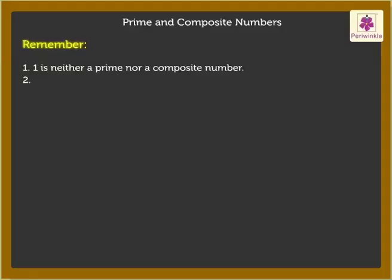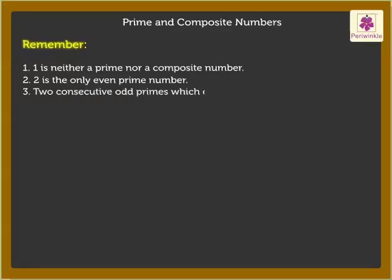2 is the only even prime number. Two consecutive odd primes which differ by 2 are called twin primes.